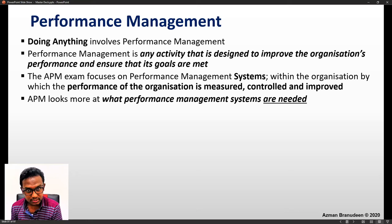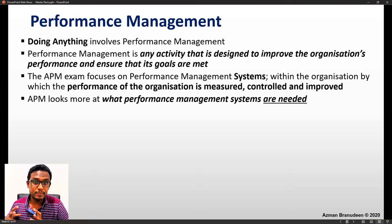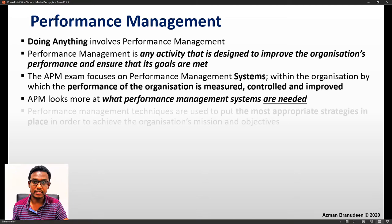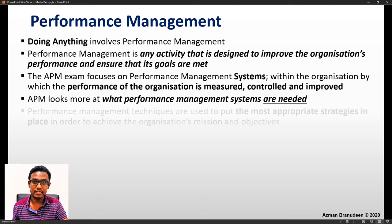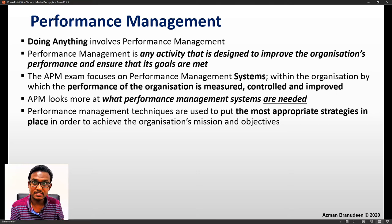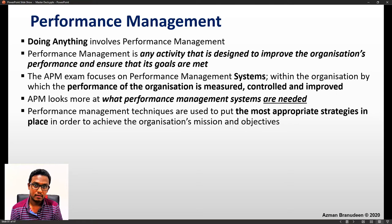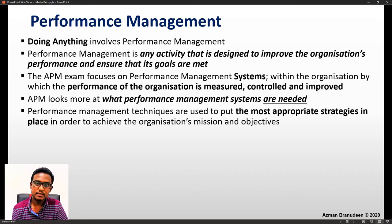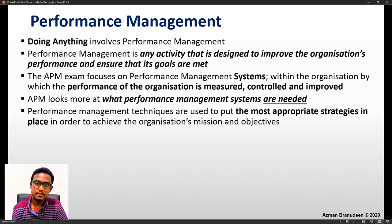APM looks at what performance management systems are needed, whereas for performance measurement alone, APM looks at the appropriateness of performance measures. Performance management techniques are used to put the most appropriate strategies in place to achieve the organization's mission and objectives. The management of what you do has to ultimately take you to your mission — the link between what you do and achieving your goals is what is created through performance management systems.